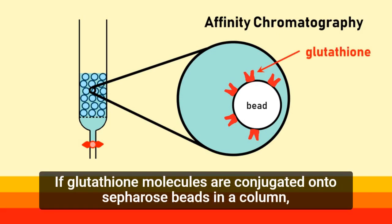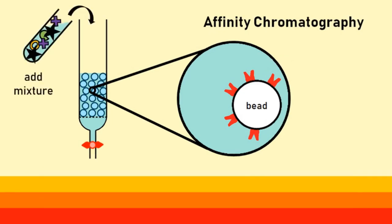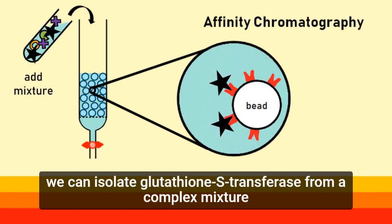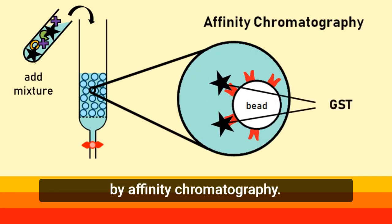If glutathione molecules are conjugated onto sepharose beads in a column, we can isolate glutathione S-transferase from a complex mixture by affinity chromatography.